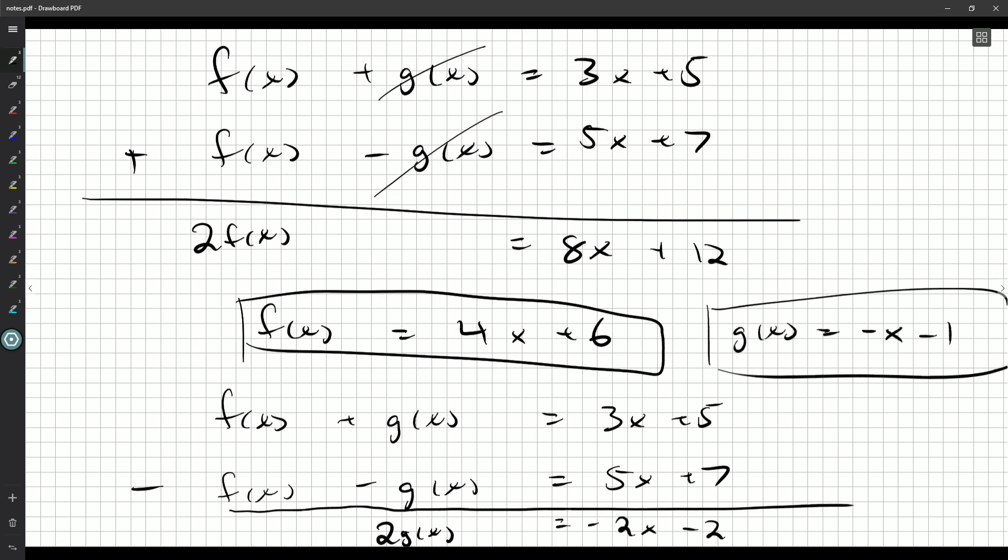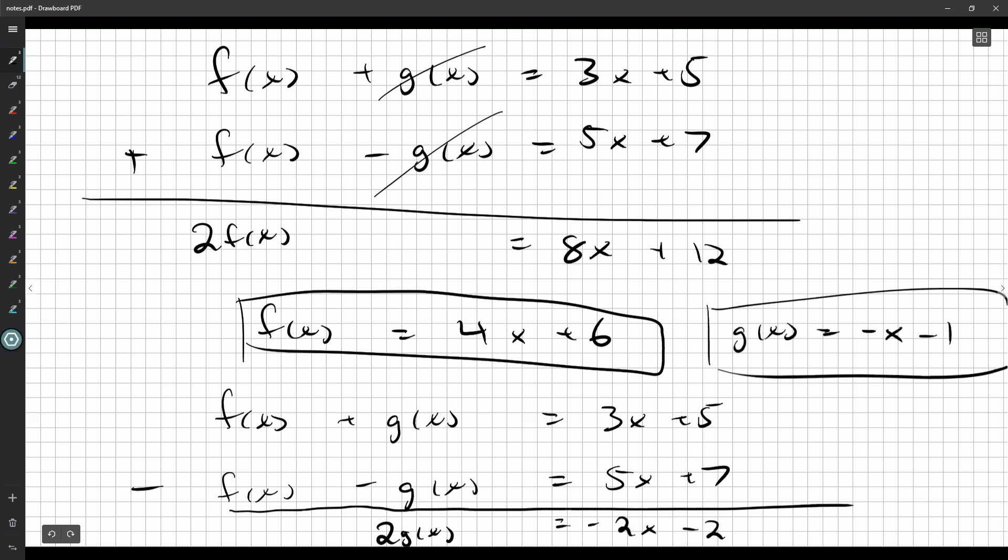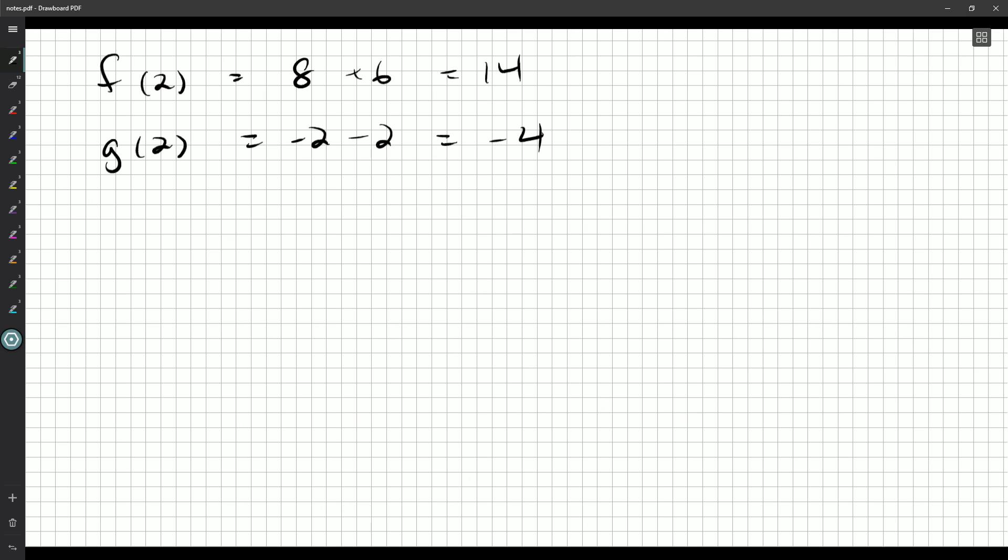Okay, now that I know these two expressions, we could, well, there's a bunch of things we could do, but I could say, well, now I know what F of 2 is going to be. It'll just be 8 plus 6, which is 14. And I know G of 2 will be negative 2 minus another 2, so negative 4. And what did we want for our answer here? We want 2F2G2.